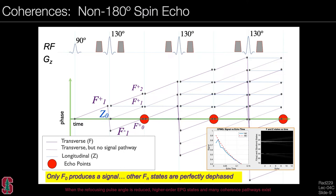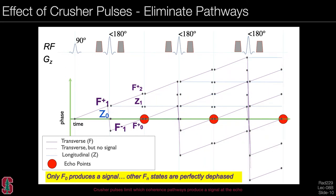What is the effect of crusher pulses? If we look at the magnetization excited by the first 130-degree pulse and follow that dashed line, crusher pulses eliminate these pathways in terms of their influence on spin echo formation. Only the F0 state produces a signal — the other states are perfectly dephased at the spin echoes. By having crushers, we eliminate many pathways' contribution to the signal at an echo. However, there is still a pathway from the 90-degree pulse going to F+1, then Z1, then F−1, refocusing at the second spin echo. Multiple pathways still lead to spin echoes.